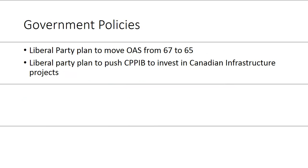Now let's talk about government policy. Old age security — to keep it sustainable — is paid with tax dollars as part of overall pension reforms. The Liberal party wants to move the eligibility age back from 67 down to 65. There's been no discussion of how that change will impact the overall budget, but there is considerable pressure on future tax dollars to support that change.